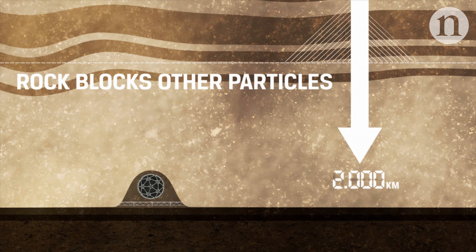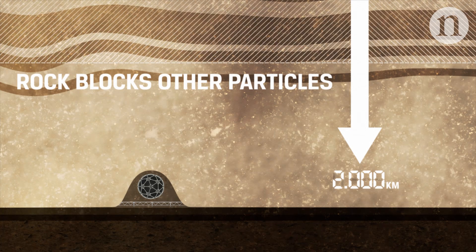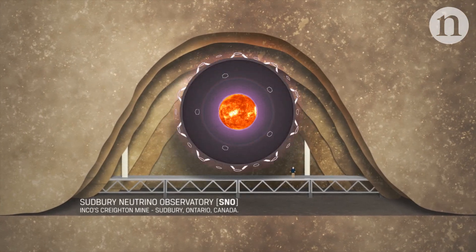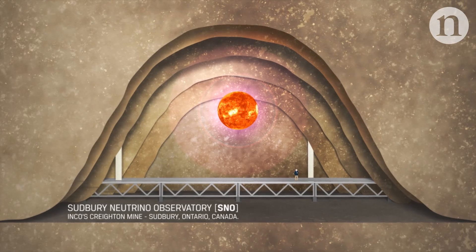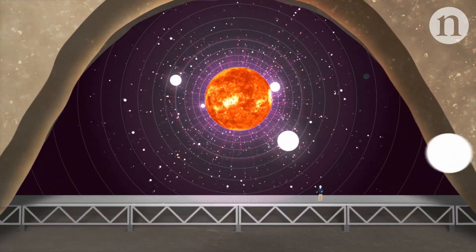It's quite ironic that you have to go way down into the earth in order to study the Sun. We can use neutrinos to probe our universe in various ways.